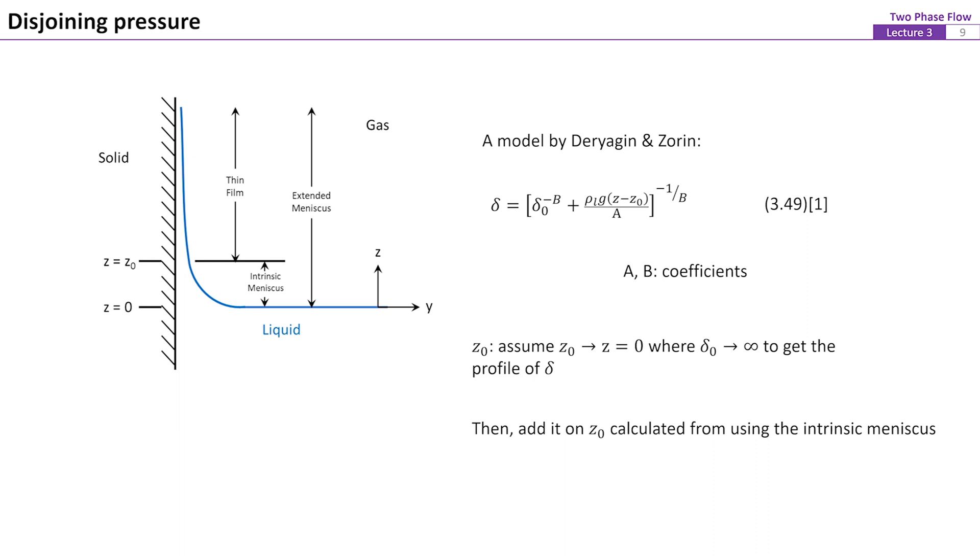The disjoining pressure effect can also greatly affect the formation of thin liquid film on vertical plates when the liquid wets the solid surface very well. In this case, instead of forming a finite contact angle, a very thin liquid film may form on the vertical plate above the intrinsic meniscus. The location of the triple contact point for the intrinsic meniscus z equals z0 can be estimated by using the Young-Laplace equation and the revisions that we have discussed in lecture 2. The combination of the intrinsic meniscus and the thin liquid film above it is called extended meniscus.